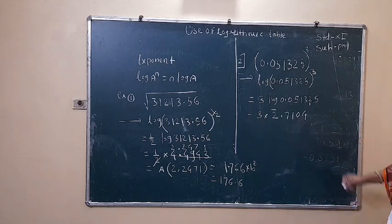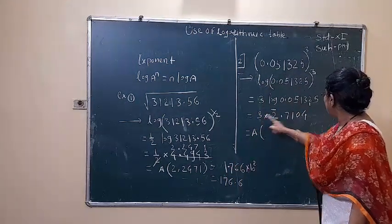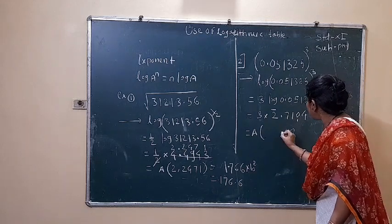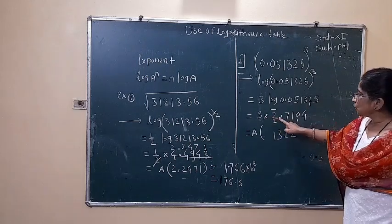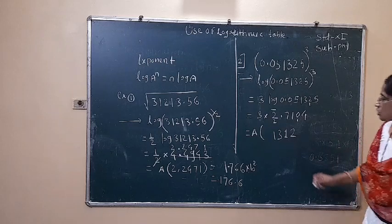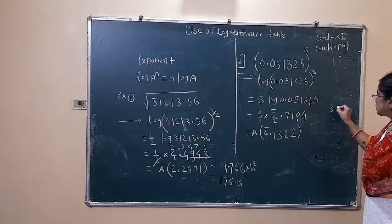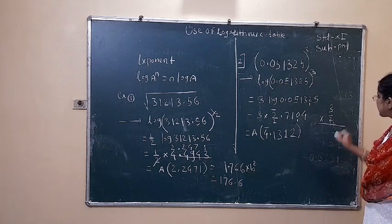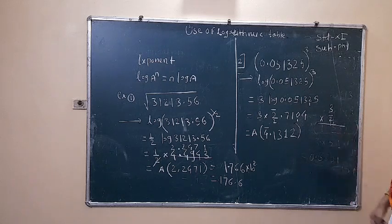So we get 7101 plus 3 equals 7104. Then multiply it by three. Four into three is twelve; three into zero is zero, carry one; three into one is three; three into seven is twenty-one plus carry. Then three into two bar gives six bar, and plus two gives bar four. So we get bar four characteristic — that is, minus three and bar two.